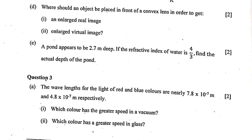Question 2c continued: Where should an object be placed in front of a convex lens to get an enlarged real image? It should be between F1 and 2F1. A common misconception is placing it at F1, which gives a highly magnified image — but the question asks for an enlarged real image, so between F1 and 2F1. For an enlarged virtual image, place it between the optic center and F1. Question 2d: A pond appears 2.7 m deep with refractive index 4/3 — the actual depth is 3.6 meters.